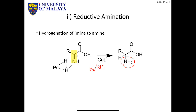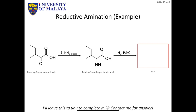Will you produce an enantiomerically pure amino acid or not? That's for you to think about. Another example: with 3-methyl-2-oxo pentanoic acid and excess ammonia, you'll get an imine group.